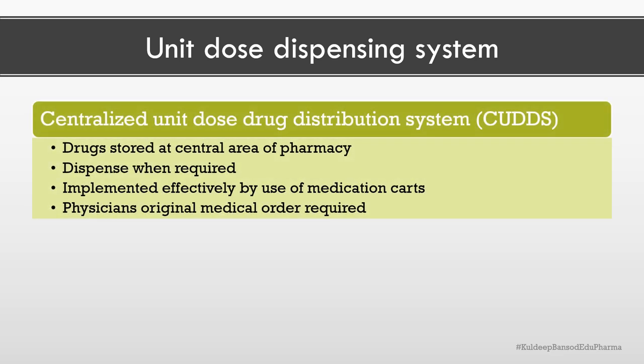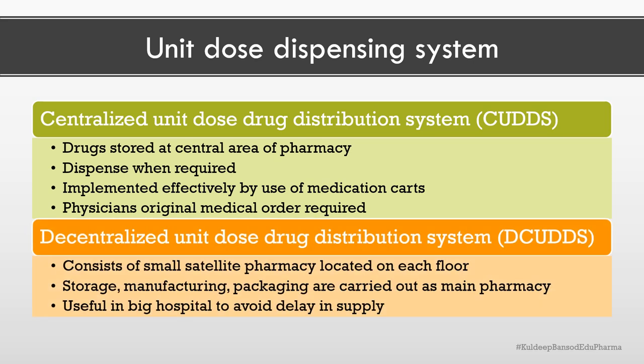The unit dose dispensing system can be adopted using two different ways. The first is the centralized unit dose distribution system, where all the drugs are stored in the central area of the pharmacy and dispensed at the time when required by the patient. This system can be used effectively with medication cards and by sending copies of the physician's original medical order to the pharmacy.